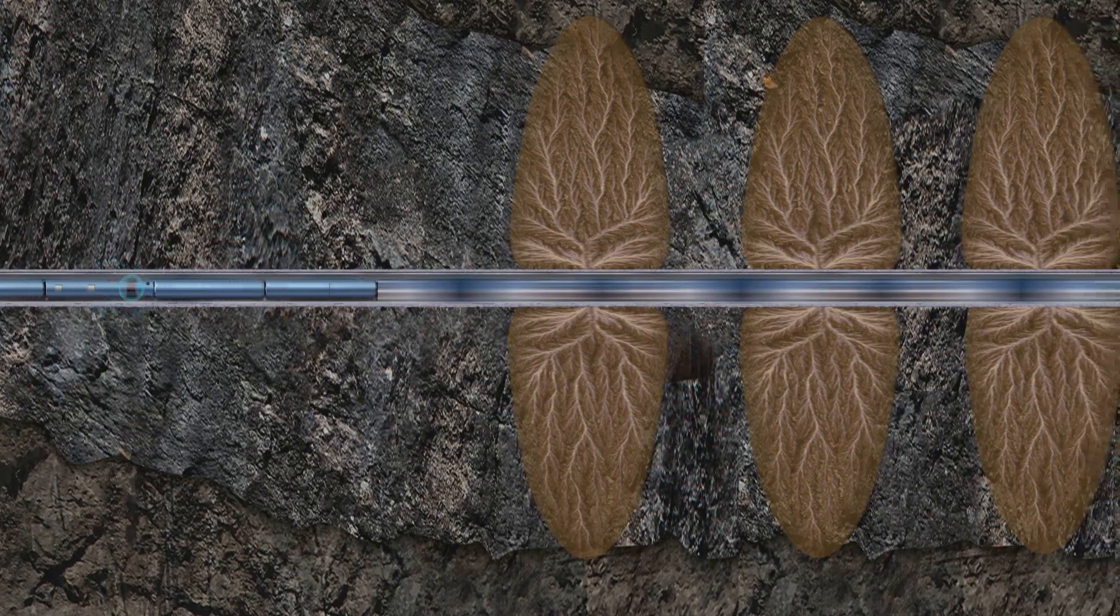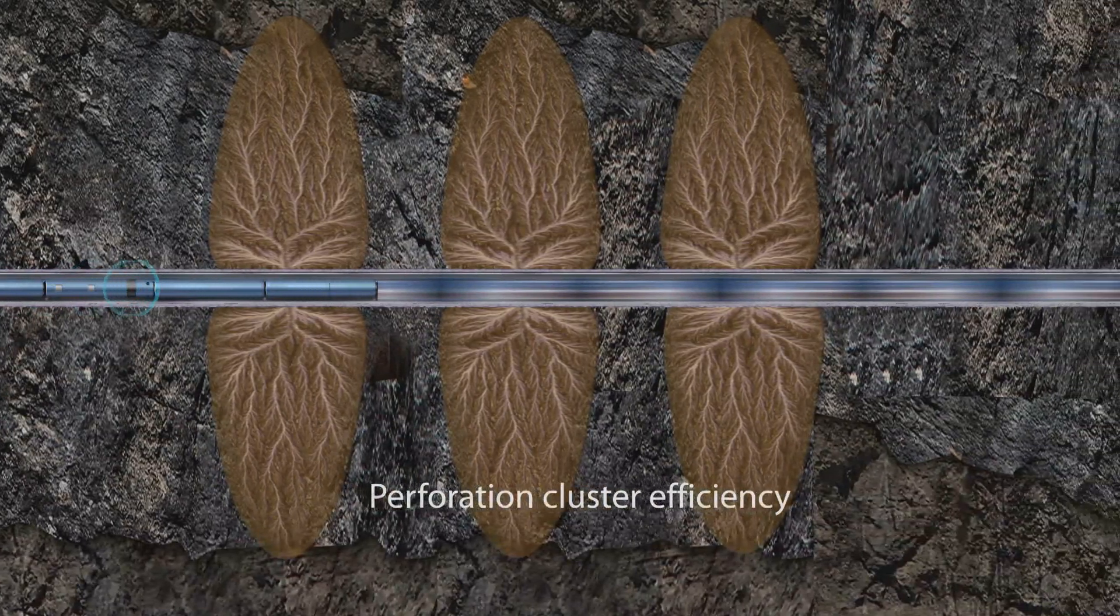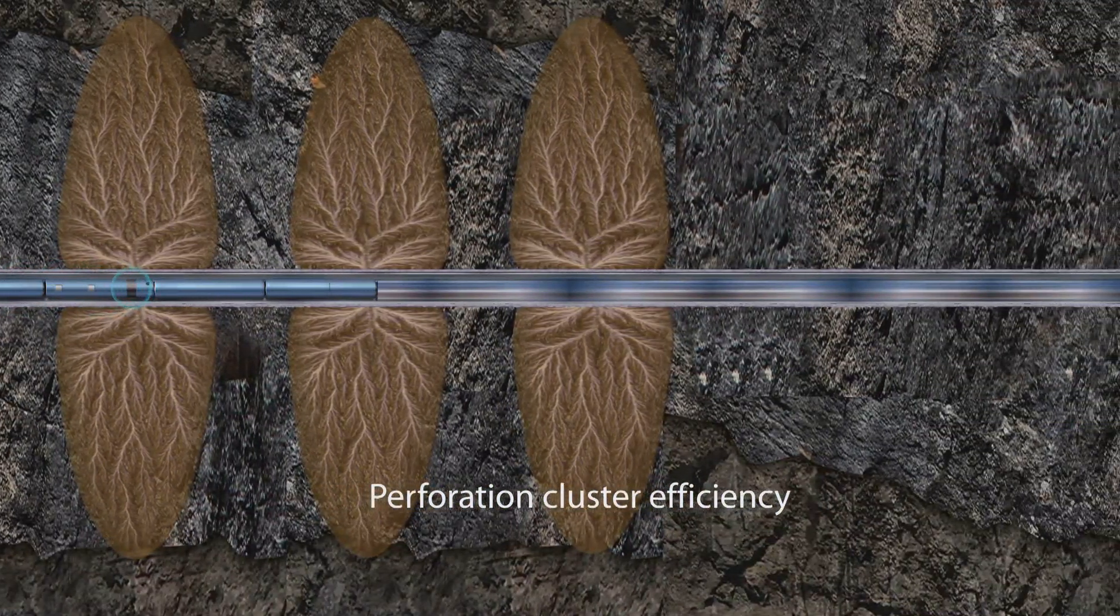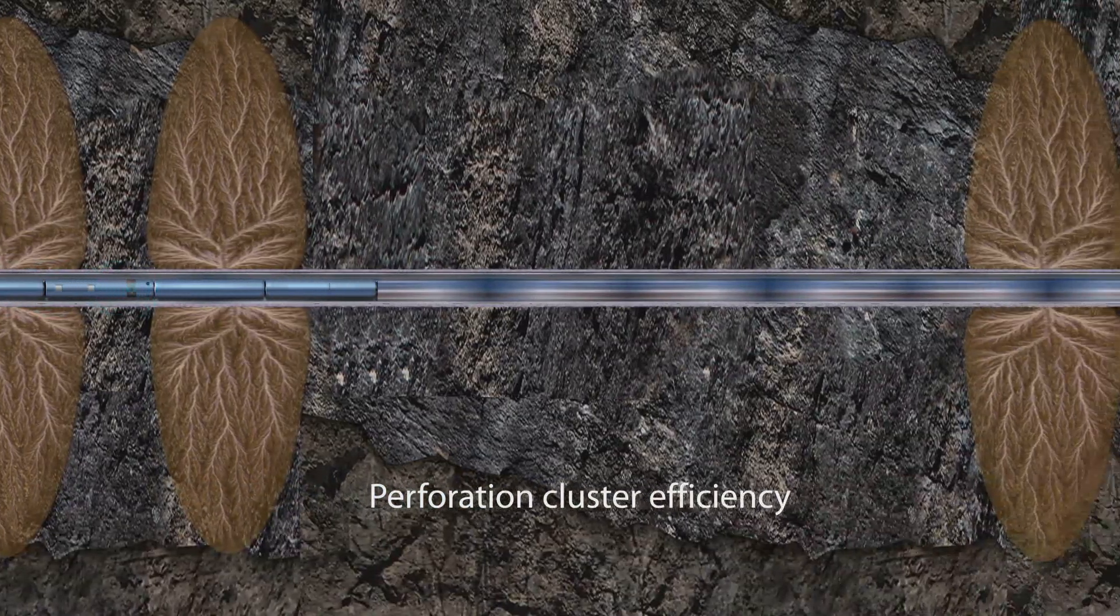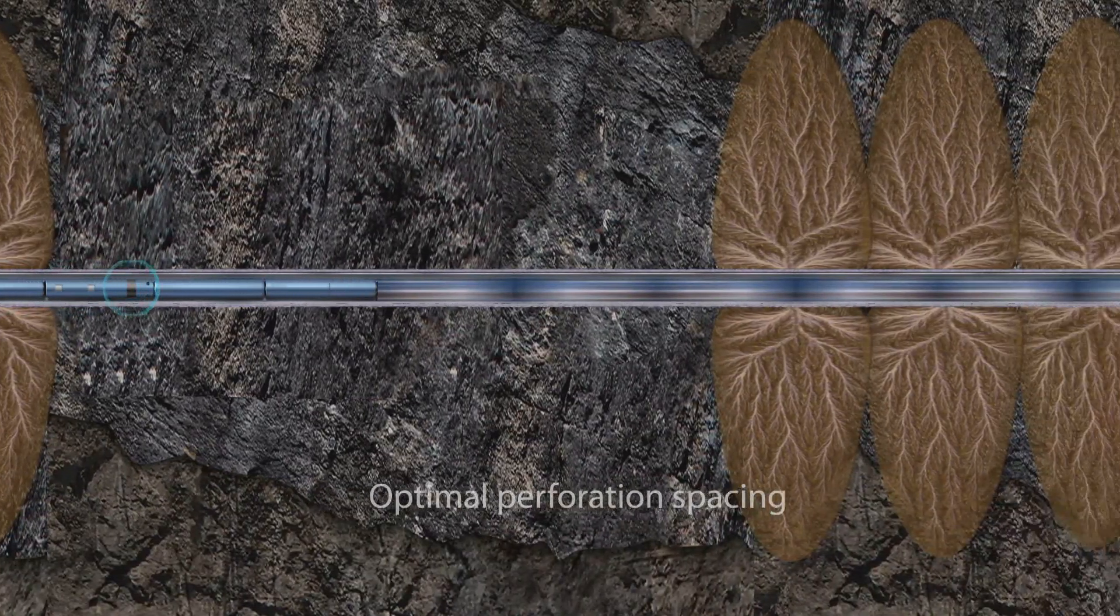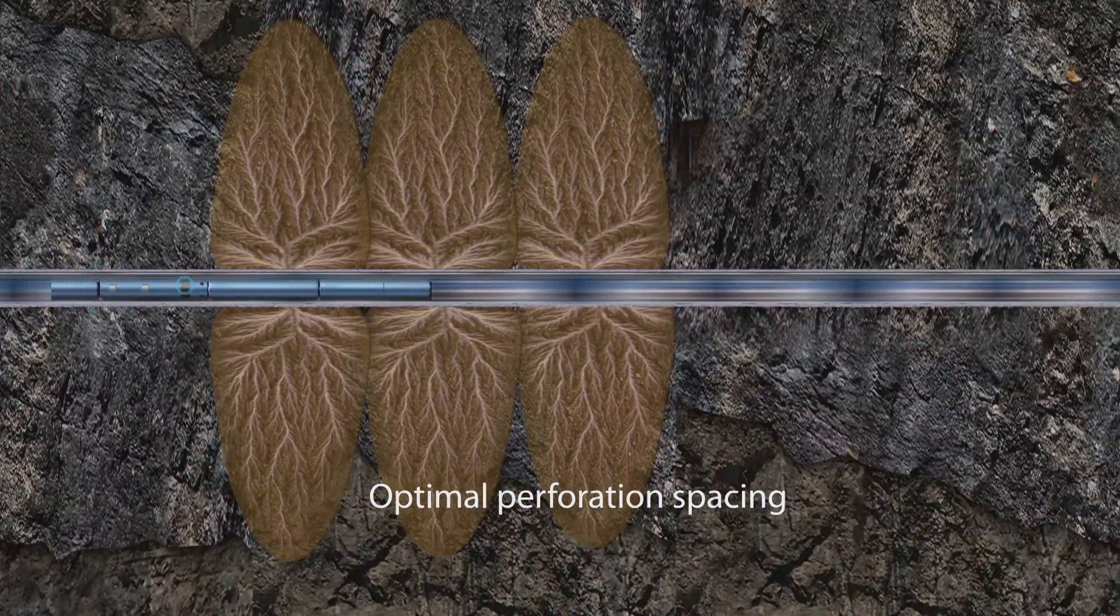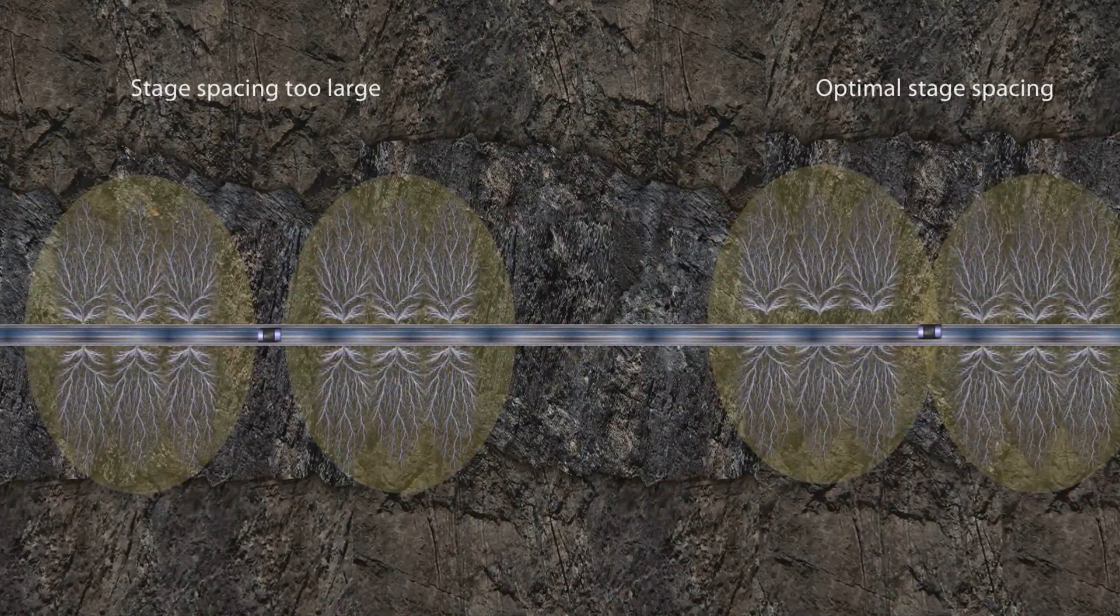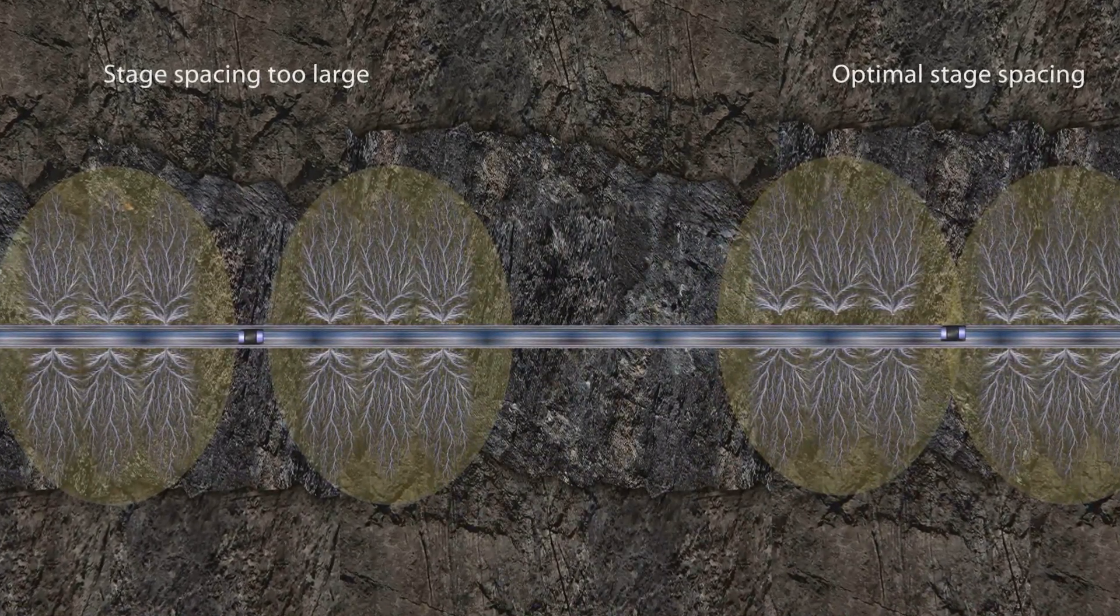The location of the propped fracture can be used to evaluate perforation cluster efficiency and identify whether the perforation spacing is too large. This information can be used to identify optimal perforation and stage spacing to improve completion efficiency. You can also determine whether all zones were stimulated as planned and identify any potential zones for re-stimulation.